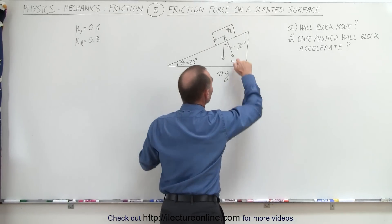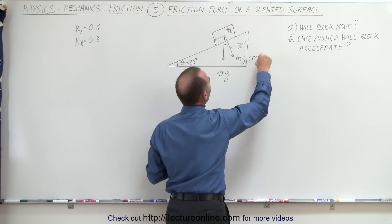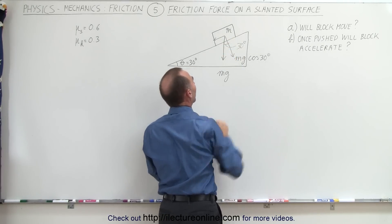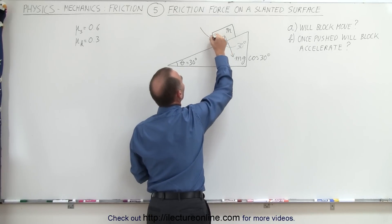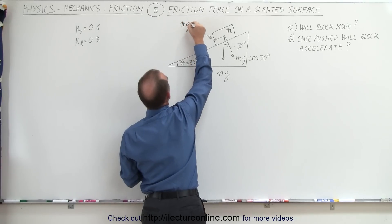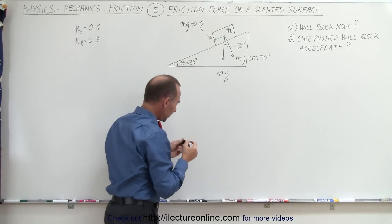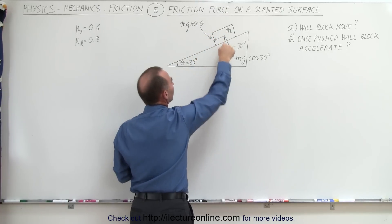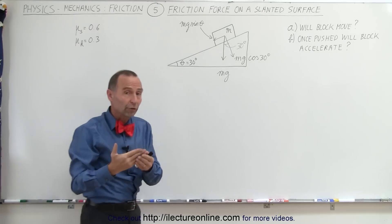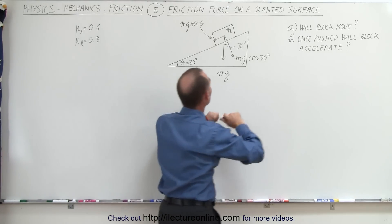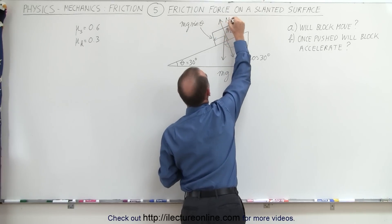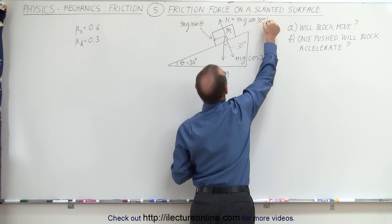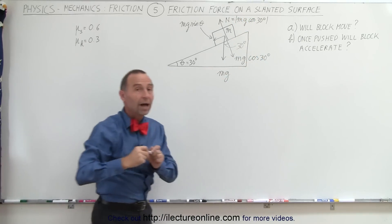We can say that the component perpendicular to the surface is mg times the cosine of 30 degrees, because that side is adjacent to the angle with mg as the hypotenuse. That makes the component parallel to the surface equal to mg times the sine of theta. The parallel component tries to pull the block down the incline, while the perpendicular component pushes the block against the surface, so the surface pushes back with an equal and opposite normal force equal to mg cosine of 30 degrees.